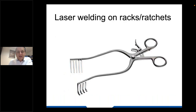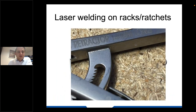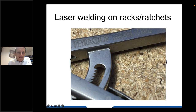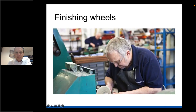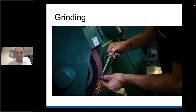Laser welding is something used a lot now on surgical instruments and is a great benefit. Previously, things like the racks on instruments may have been left open with a gap, or soldered - which isn't biocompatible. Now we use laser welding. In my opinion, any gap on a surgical instrument that isn't moving should be laser welded to prevent ingress of moisture, bacteria, and debris. We also use finishing wheels - a scurf wheel is a very rough finishing wheel for taking welds off and dressing welds. Grinding is also used, pictured here on scissors.